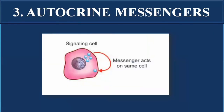The other type is autocrine messengers. As the name suggests, in autocrine signaling, the signaling cell and the target cell are the same cell. Chemical substances released from the cell act on that same cell. This type of signaling is known as autocrine signaling.